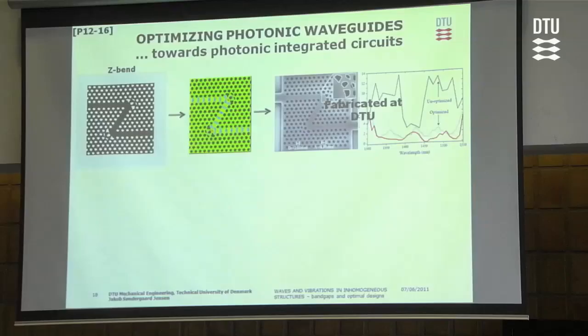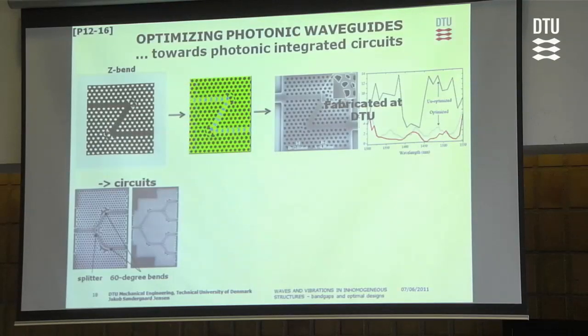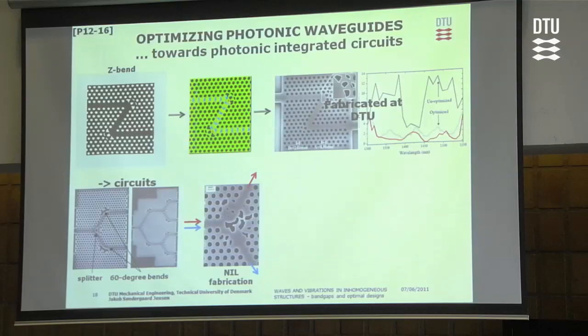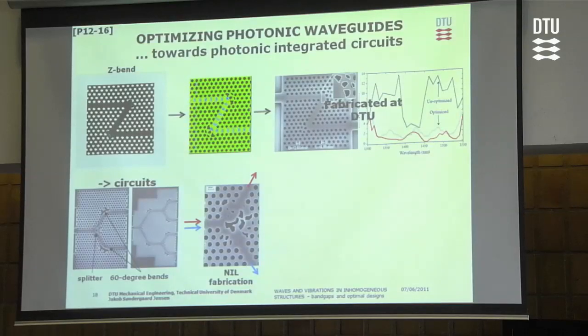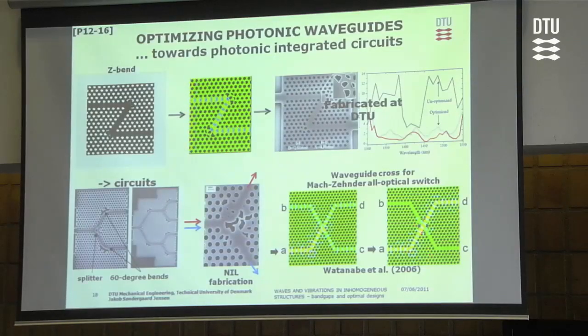The C-band was actually fabricated and showed very nice performance. We also designed other components such as a splitter and a 60-degree bend, moving closer to the idea of making low-loss optical circuits with these kinds of devices. We also considered a wavelength splitter where shorter and longer wavelengths are directed different ways, leading to a very intricate optimized design. We had collaboration with a Japanese research group who used our optimization code to make devices such as an optimized waveguide cross.